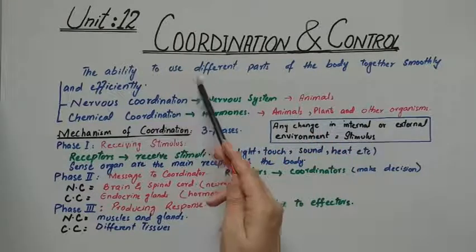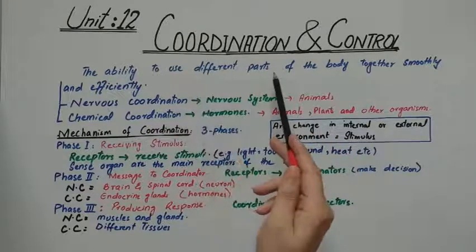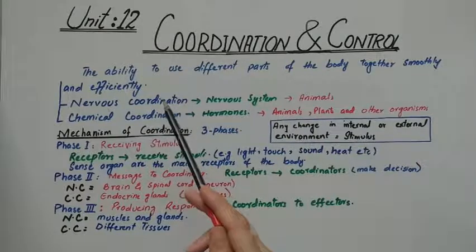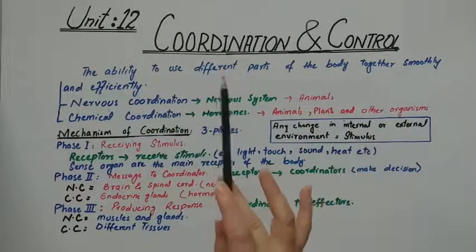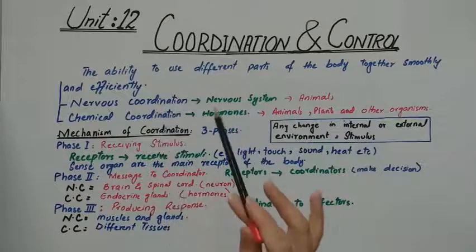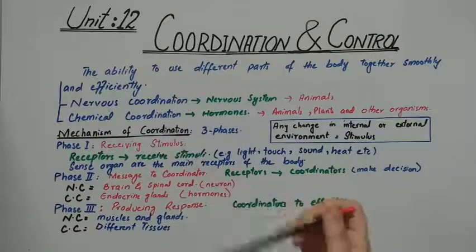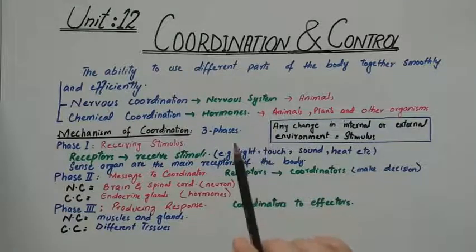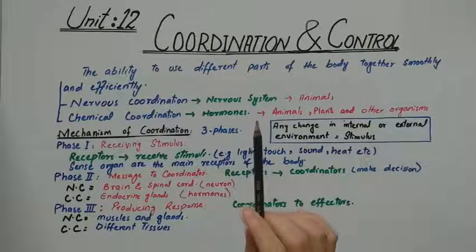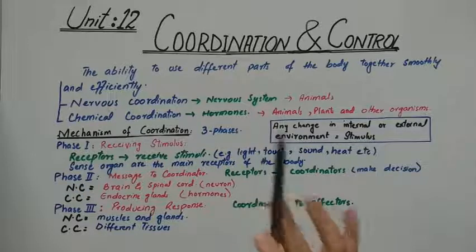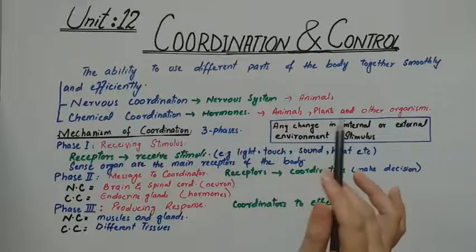First, let's move towards the coordination definition. Coordination is the ability to use the different parts of the body together smoothly and efficiently — to integrate among different parts of the body and to respond to stimuli in order to keep harmony with the environment.